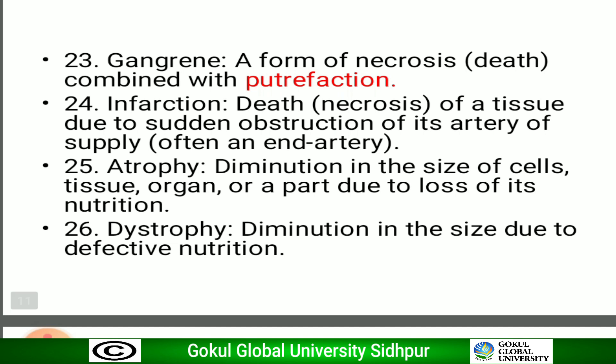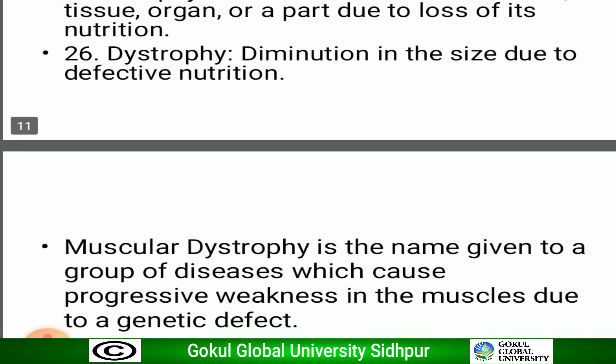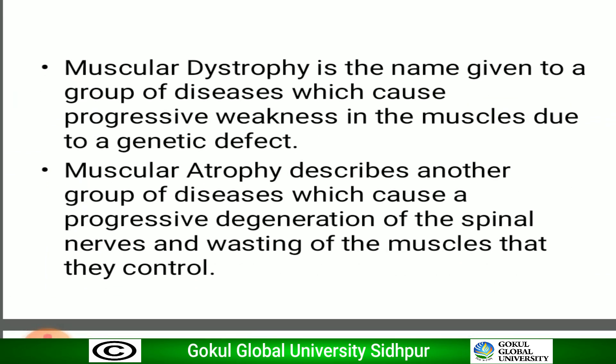Atrophy is a diminution in size of cells, tissue, organ, or part due to loss of its nutrition. Dystrophy is due to defective nutrition — you must remember this difference. Muscular dystrophy is a group of diseases causing progressive muscle weakness due to a genetic defect. Muscular atrophy describes diseases causing progressive degeneration of spinal nerves and wasting of the muscles they control.